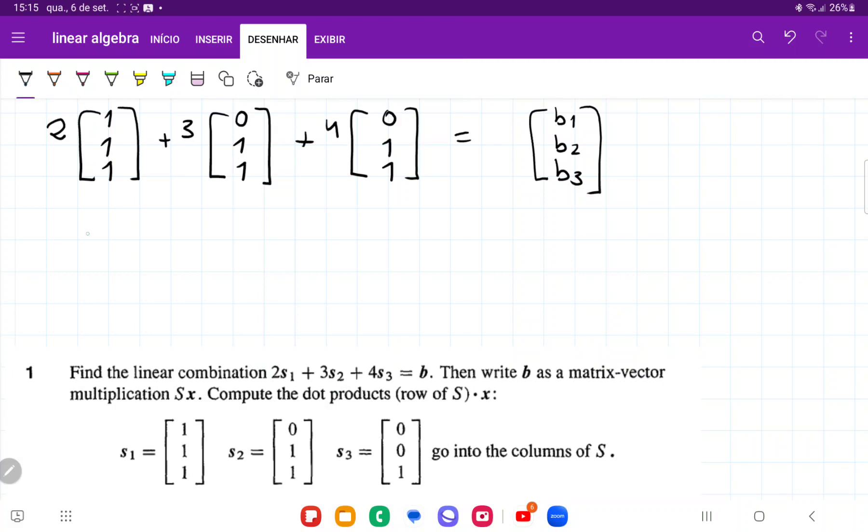b1 is going to be 2 times 1 because it's the first element that gets scaled by 2, plus 3 times 0 for the first element that gets scaled by 3, plus 4 times 0. This is just going to give us 2, so b1 equals 2.